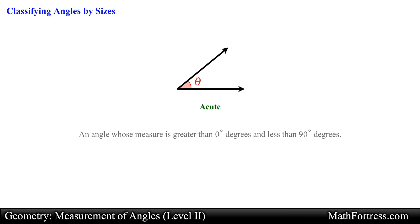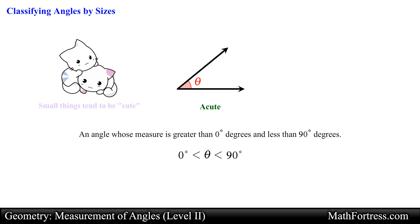An acute angle is an angle whose measure is greater than 0 degrees and less than 90 degrees. The angle shown can be classified as an acute angle. Acute angles are the smallest, being between but not including 0 and 90 degrees. A way to remember what acute angles look like is by remembering that small things tend to be cute. The word acute comes from the Latin word acutus, which means sharp or pointed.